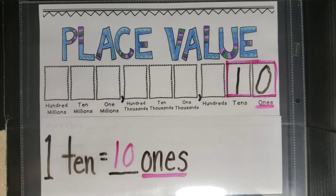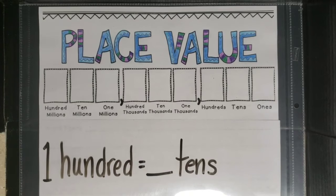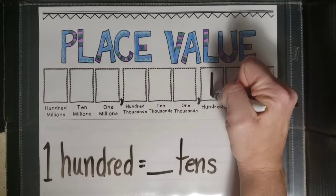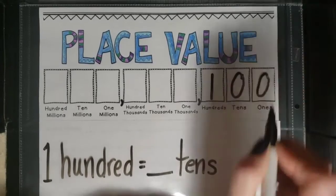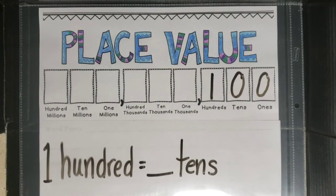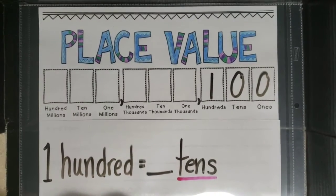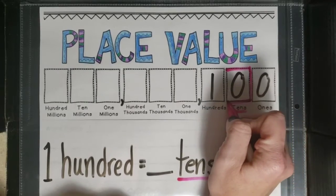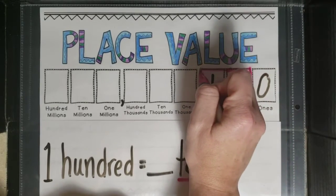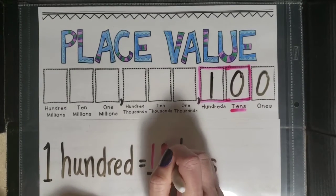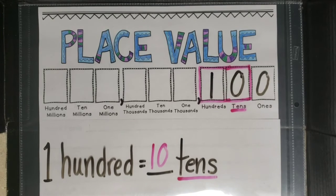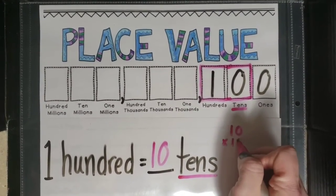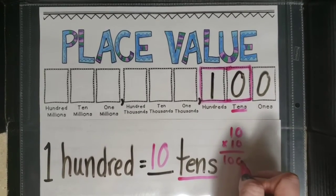I'm going to continue demonstrating with larger numbers. For this example we have one hundred equals blank tens. So I'm going to write the number one hundred on my place value chart. I see that it's asking us to convert to tens, so I draw the box around the tens column and extend to the left. One hundred equals ten tens. You can check that: ten times ten equals one hundred.